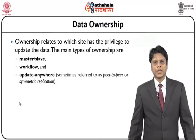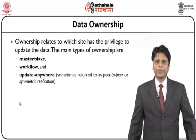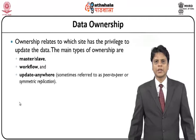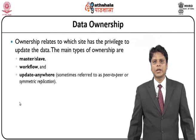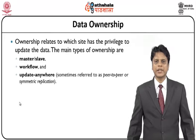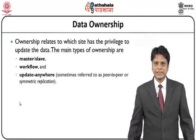Now we will look at data ownership. Ownership relates to which site has the privilege to update the data. We need to ensure which specific site requires an update on the data. Some sites may have used a snapshot with no transactions, while others may have used a snapshot with some transactions. The main types of ownerships are master-slave, workflow, and update anywhere — sometimes referred to as peer-to-peer or symmetric replication.